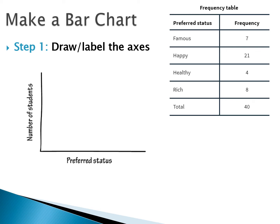Make sure that when we draw these, we have the x and y axes labeled. On the bottom, we have 'preferred status,' which is going to be the options, and then 'number of students,' which will be our frequencies.